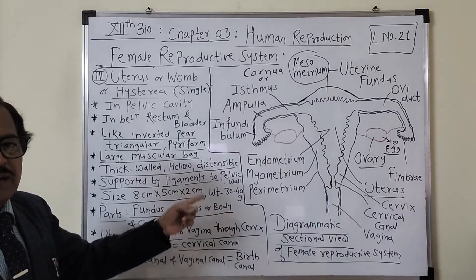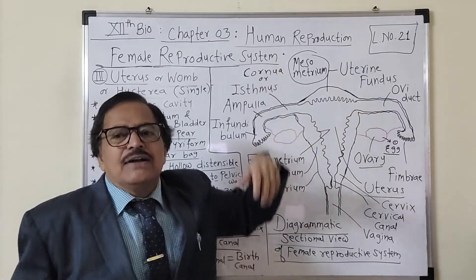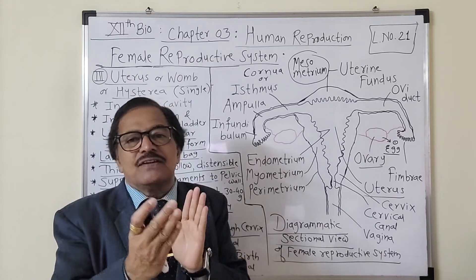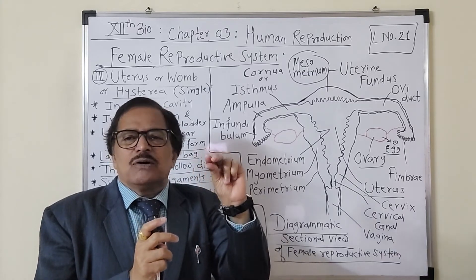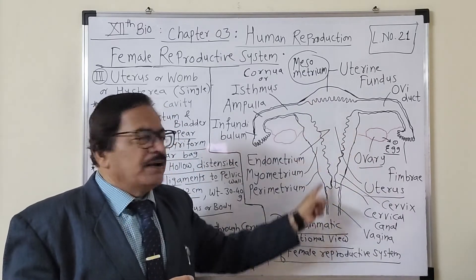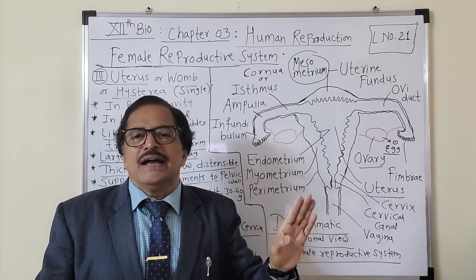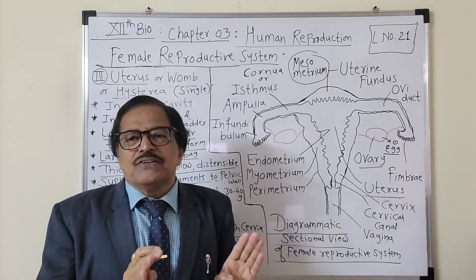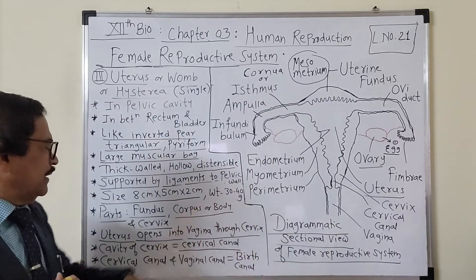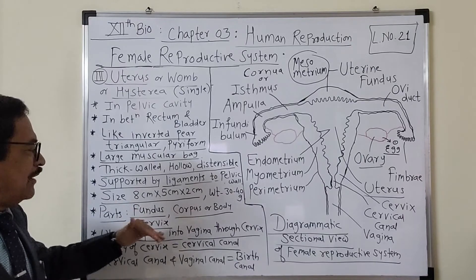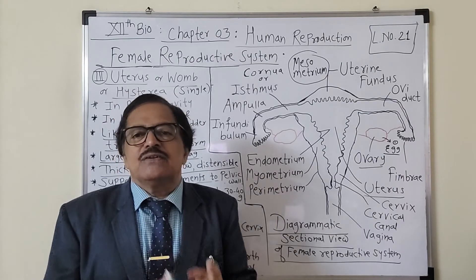The size of the uterus is simple to remember: 8 cm in length, 5 cm in width, and 2 cm in thickness when not pregnant. When empty, its weight is 30 to 40 grams. We will take up the parts and the rest of the structure in our next lecture.